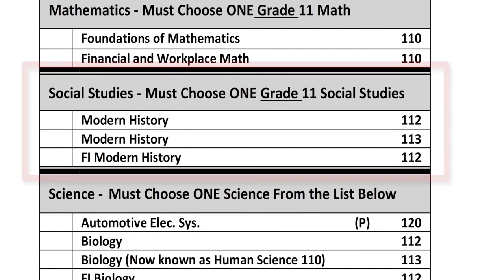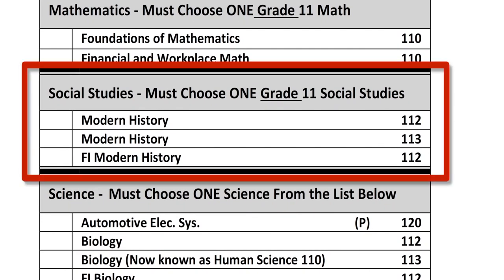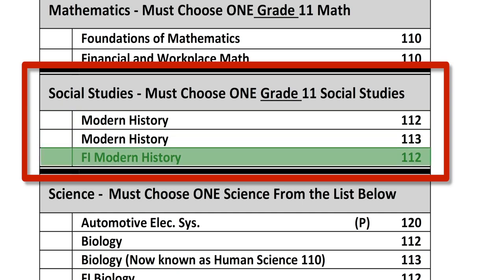You must now choose your mandatory history course. If you have already passed Modern History 11 or are currently taking this course, then you can skip this section. For all other students, your options for Modern History are Modern History 11-2, Modern History 11-3, or French Immersion Modern History 11-2. Please select one of these options now by placing an X in the box on the left-hand side of the course you are selecting.